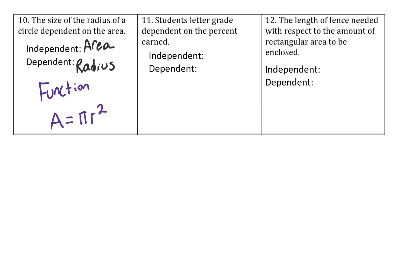In this case, it would need to be reworked to solve for r which happens to be that r equals the square root of A divided by pi. That's not super important but the clear thing that I want you to see is that for any A value there's only one radius that's going to be associated with it.